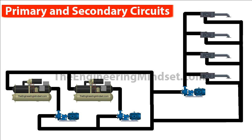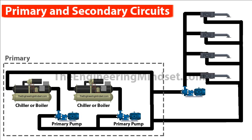The first circuit is known as the primary circuit. This contains the chillers or boilers as well as the primary pumps. Now these can be configured slightly differently — the pumps don't necessarily have to be directly feeding the chiller or boilers; they can feed into a header feeding either or. But this is just a very typical example to help you understand and learn HVAC systems.